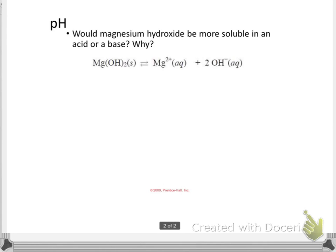So for pH, let's take a look. Let's say we had magnesium hydroxide, which is pretty insoluble. And the question is, would it be more soluble in an acid or a base, and why?